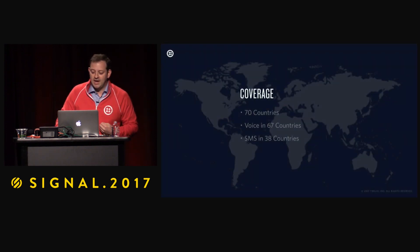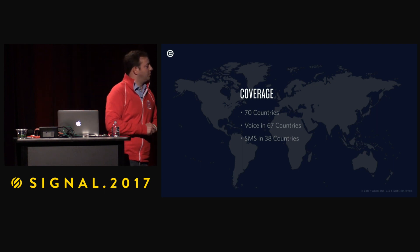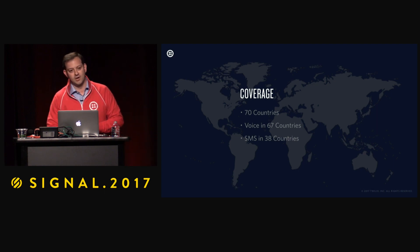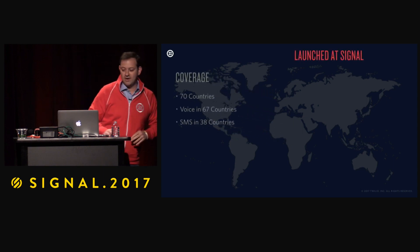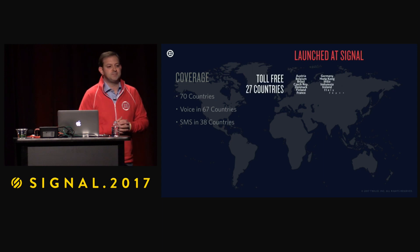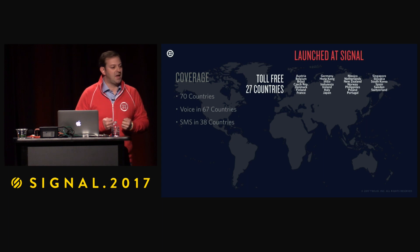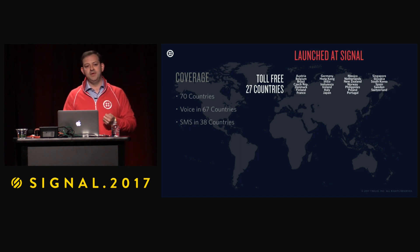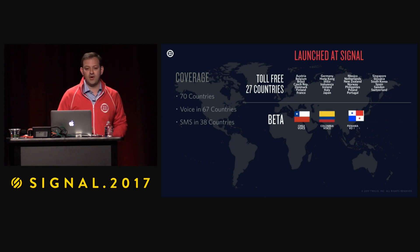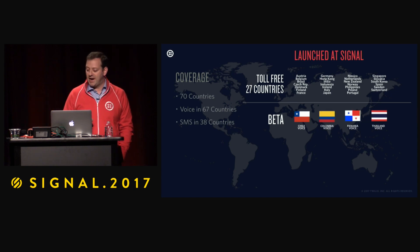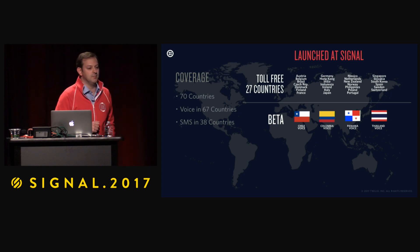Let's look at what kind of numbers are available through the Twilio platform. We have numbers in 70 countries around the world. Most of them are voice-enabled and a portion of them are SMS-enabled. Just at Signal today we announced new numbers in three different categories. We spent a lot of time bringing toll-free numbers to the platform, as there's a lot of demand especially for call center use cases. So we launched 27 countries today. We also promoted four voice countries - Chile, Colombia, Panama, and Thailand - to beta, which means they are now available through the console and API.